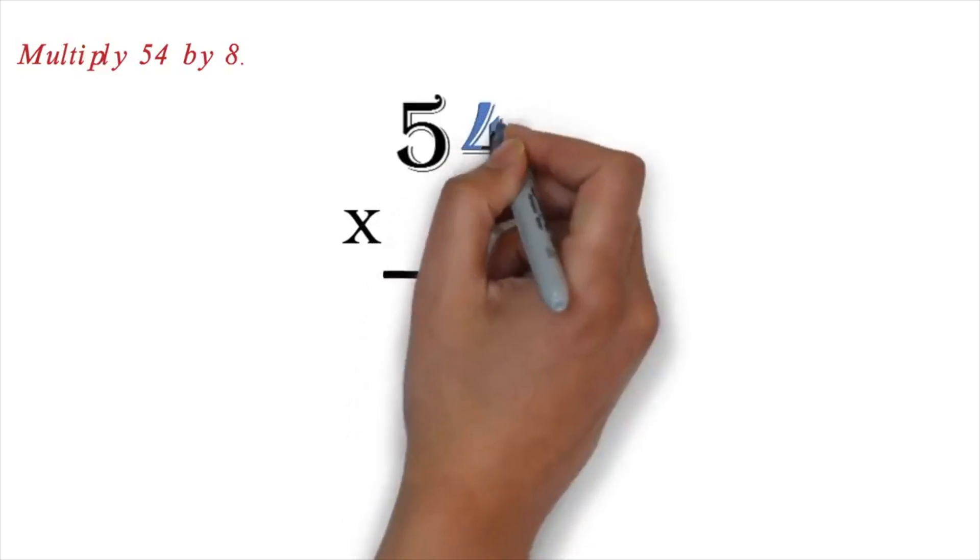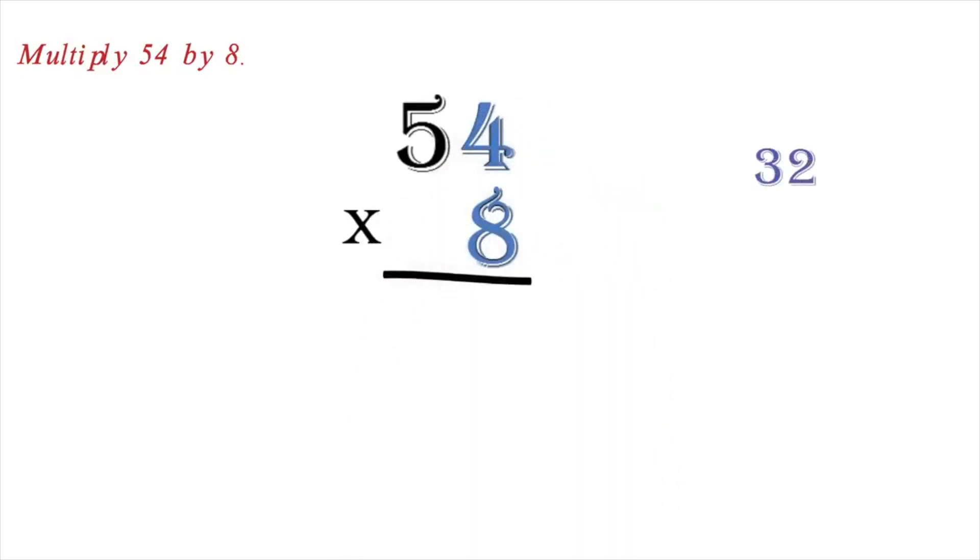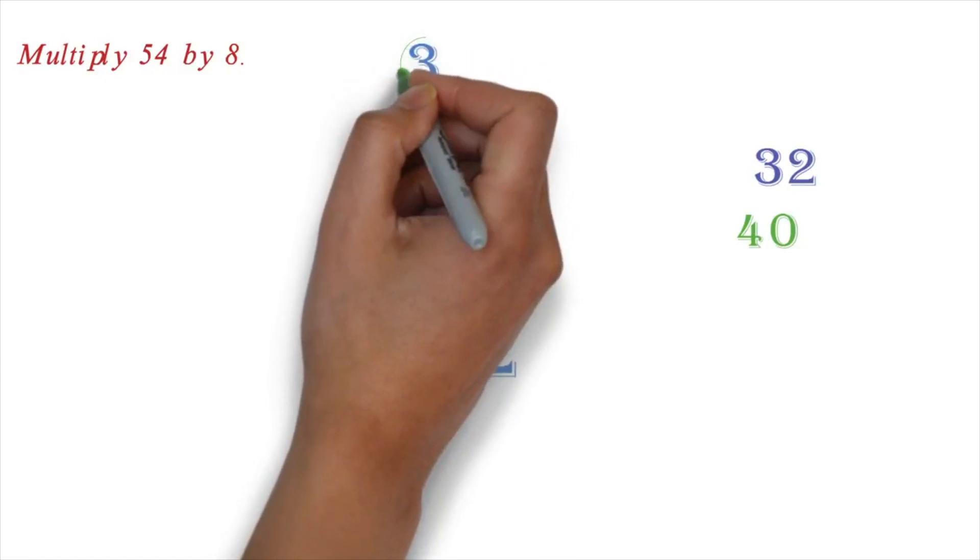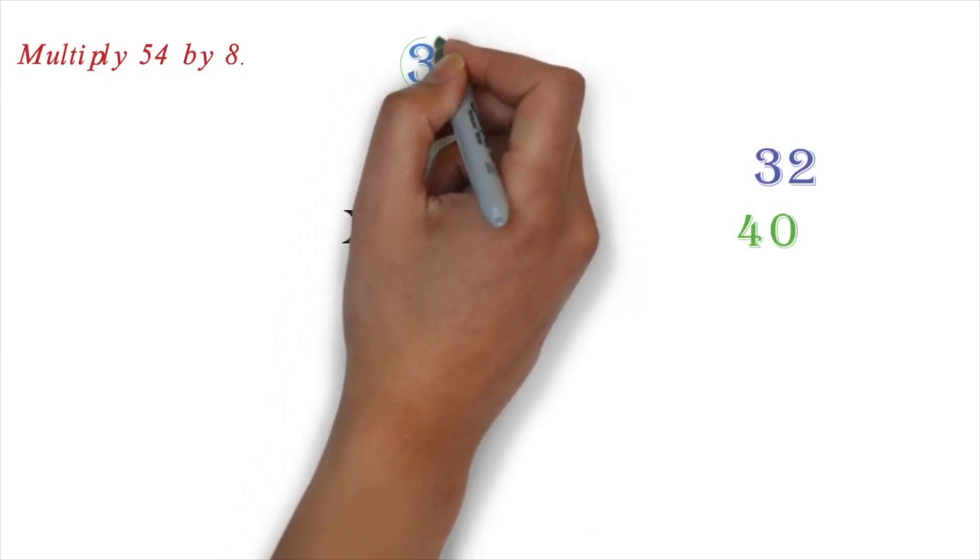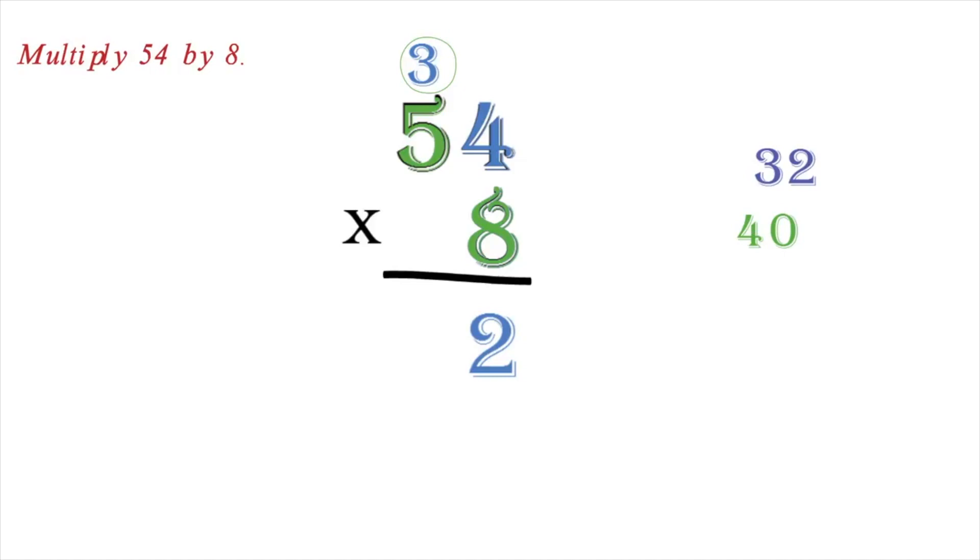Let's take another example. Multiply 54 by 8. Let's first line them up. Now we multiply each digit in the 54 by the 8. 4 times 8 is 32. Since this is double digit, we will keep the 2 and carry the 3. Next, we multiply 5 by 8. This gives us 40. We add the 3 we carried to get 43. Since there is no number to carry the 4 to, we just write it.